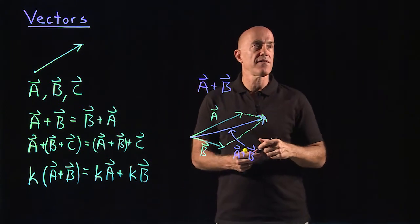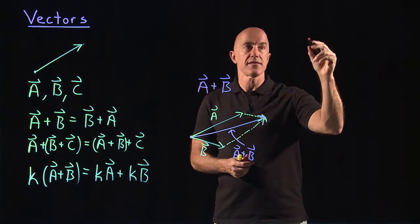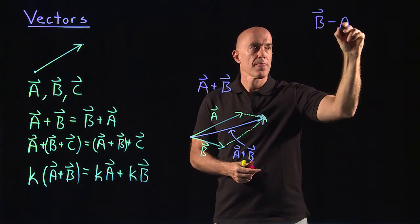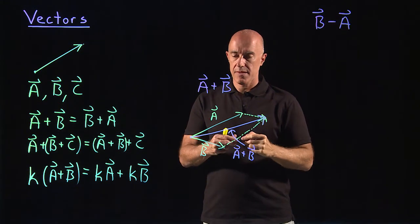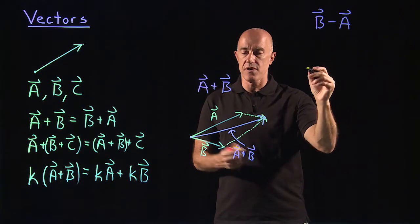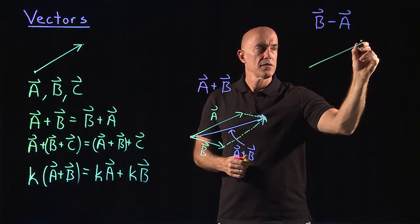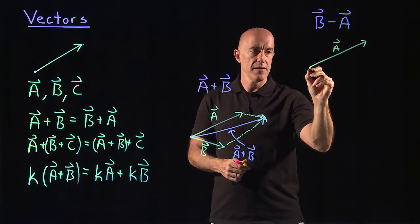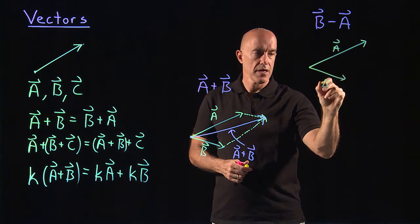What about subtracting vectors? So let's look at b minus a. Can draw the same sort of diagram. So this is a. This is b.